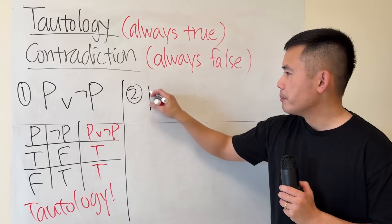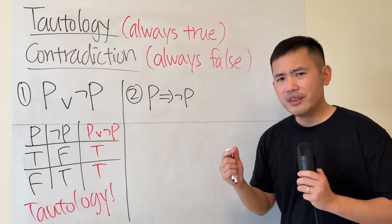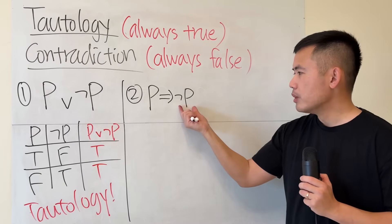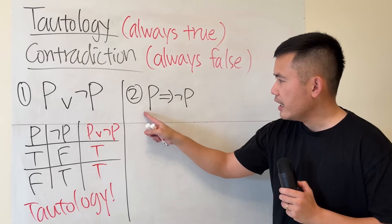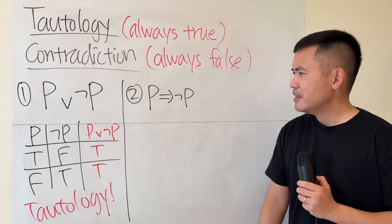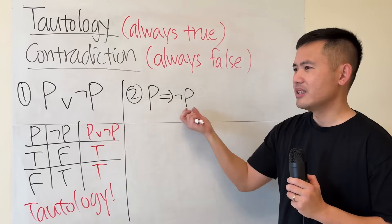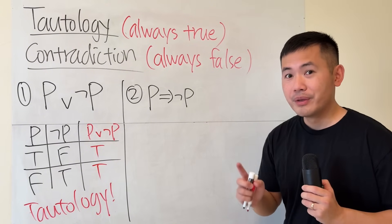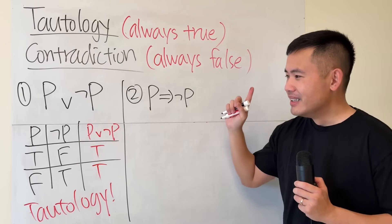Example 2: what if we have p implying not p? This is an implication. If p is 'it's going to rain today,' then not p is 'it's not going to rain today.' The statement says: if it rains today, then it's not going to rain today. But be careful — what if the premise is false?